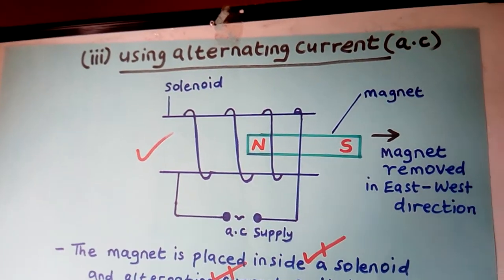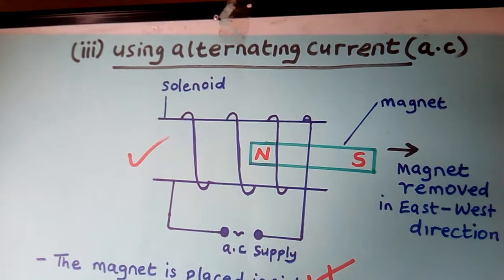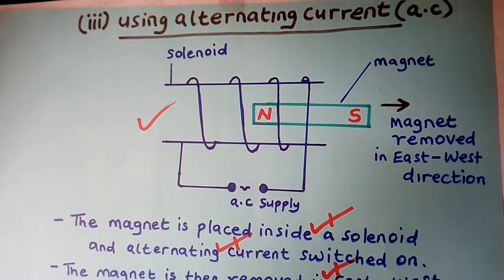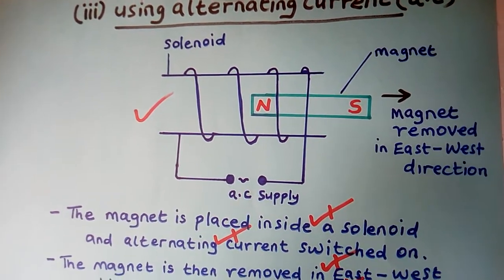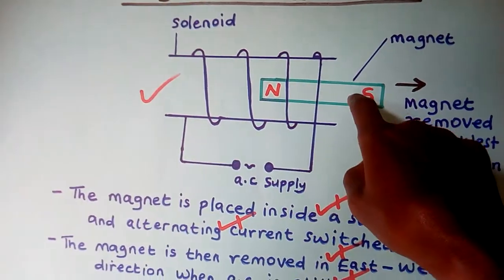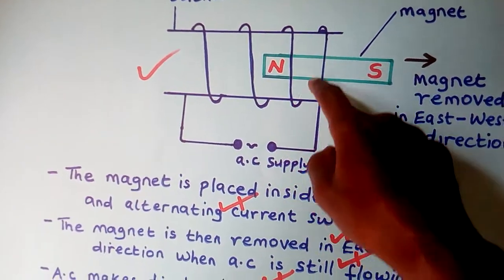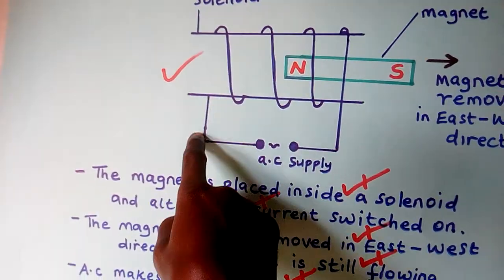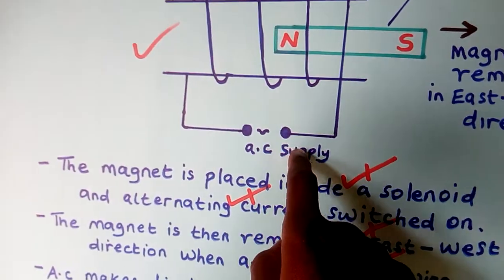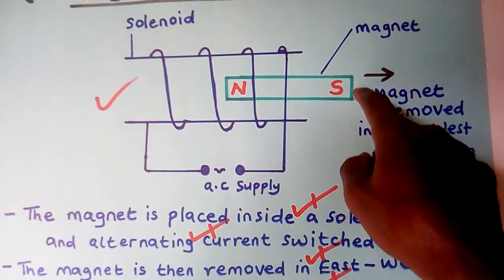The third method of demagnetizing a magnet is by using alternating current. When we talk about magnetizing using current, we also talked about a solenoid. You bring your solenoid — it has a hole inside with copper wires moving around it. These wires are connected to the source of current. This time we are using AC supply — AC means alternating current. So what you do, you get your magnet and put it inside the solenoid.